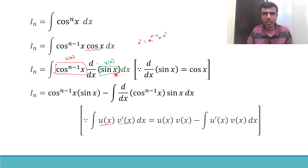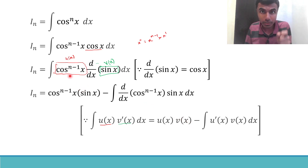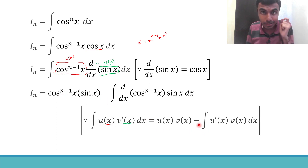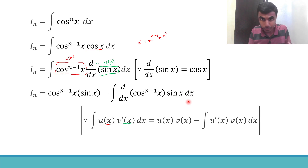Since my given integral is of that form, upon using integration by parts I get: cos^(n-1) x · sin x minus the integral of the derivative of cos^(n-1) x times sin x dx. I hope this is clear — if you did not understand, please put your query in the comments box and I will try my best to help you out.